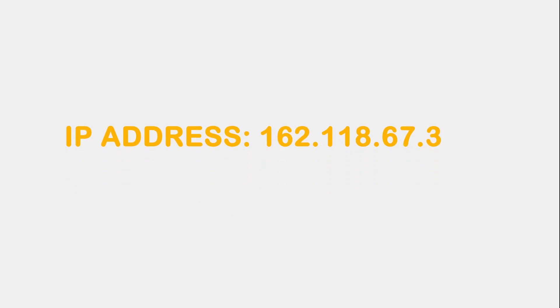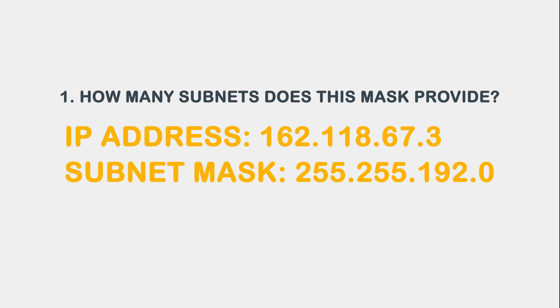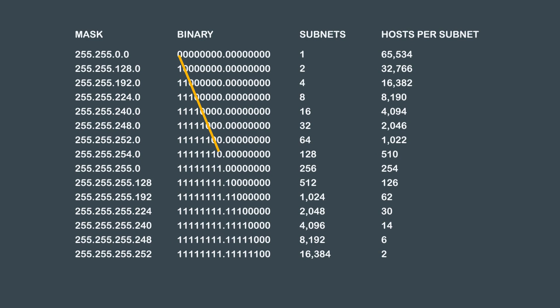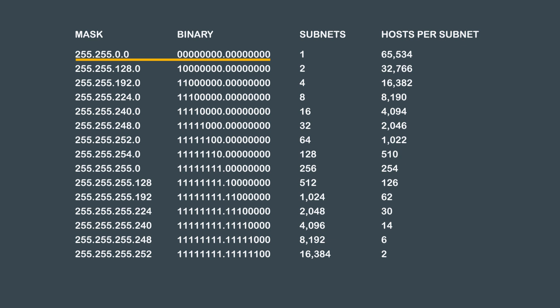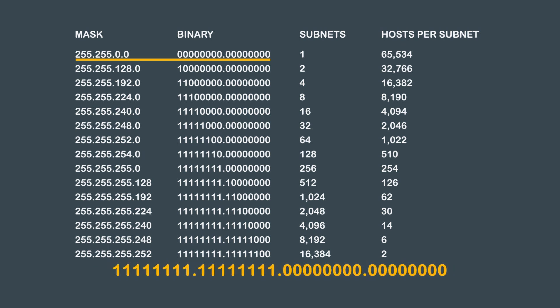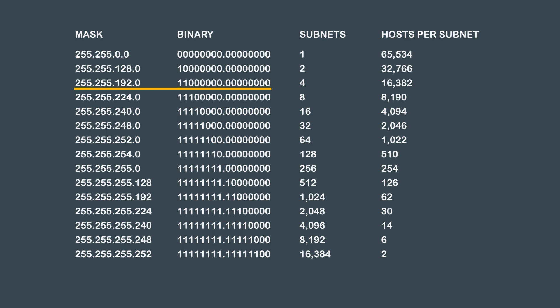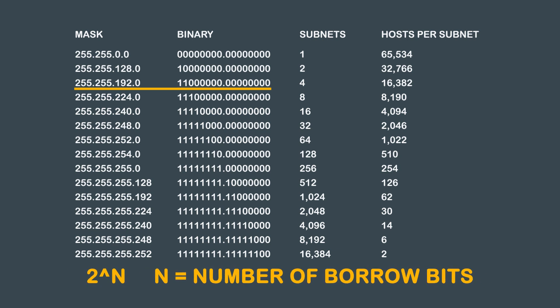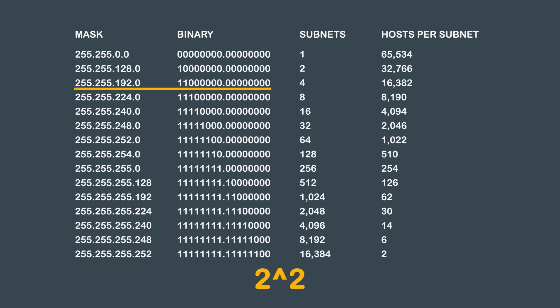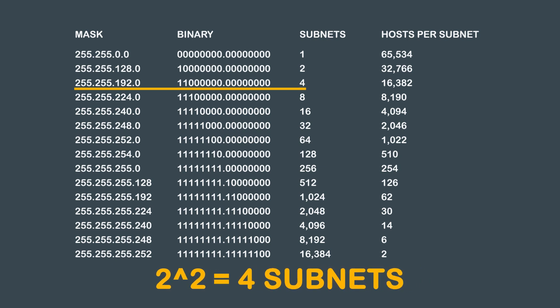For the first example, let's use the following IP address and subnet mask. Let's start by answering our first question: How many subnets does this mask provide? To calculate the number of subnets, we need to observe how many bits we have borrowed from our default Class B subnet mask, then use the 2 to the n formula. The default subnet mask for a Class B network is 255.255.0.0, which translated in binary gives all ones, all ones, all zeros, and all zeros. The subnet mask in this example is 255.255.192.0, which translated in binary gives all ones, all ones, one one, followed by all zeros, and all zeros. As you can see, we are borrowing 2 bits from the original default Class B subnet mask. Using our 2 to the power of n formula, where n equals the number of borrowed bits, we get 2 to the power of 2. So our answer to question 1 is 2 to the power of 2 equals 4 subnets.